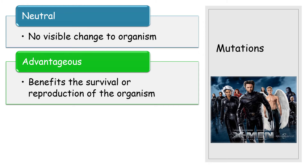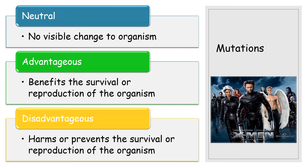An example of an advantageous mutation would be the long neck of a giraffe, which allows it to get food from the top of a tree rather than compete with other animals eating grass from the ground. Disadvantageous mutations, as the name suggests, harm or prevent the survival or reproduction of the organism. Those genes are not passed on because they harm the organism's chances of reaching sexual maturity or reproducing.